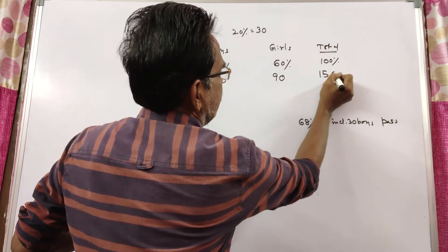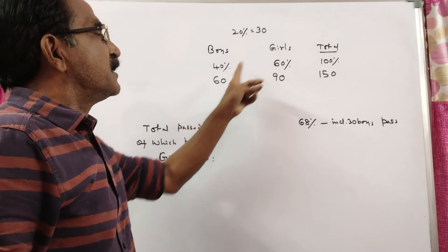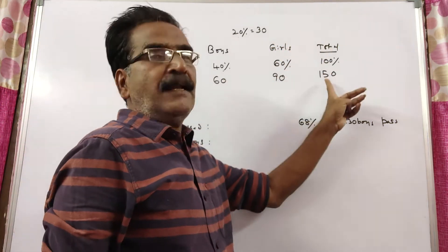So total 60 plus 30 is 90. So boys are 60, girls are 90, total 150.